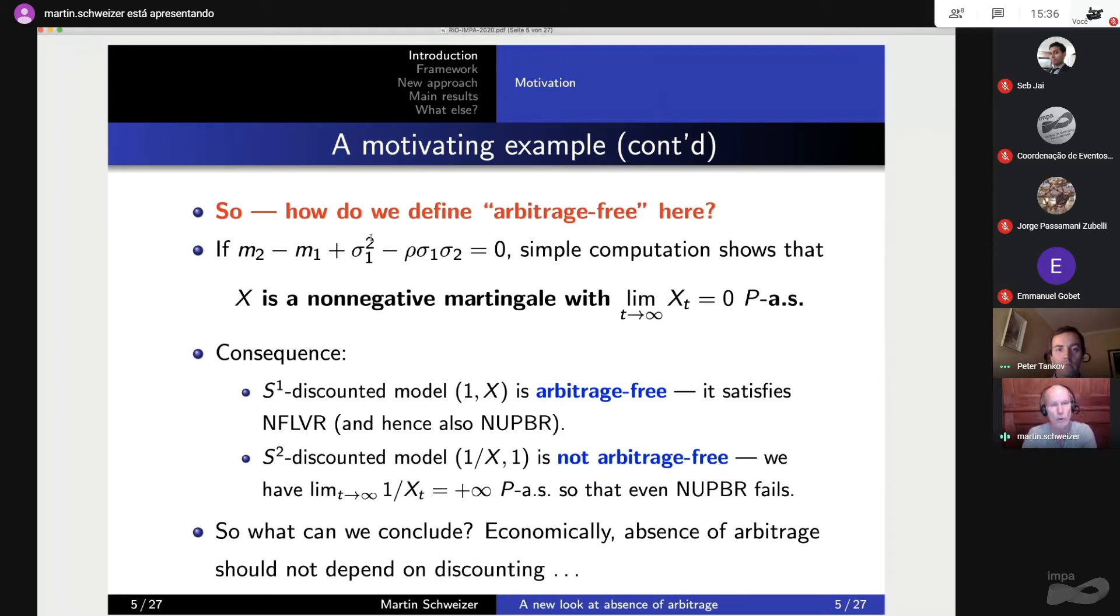Okay, so we have two possible discounted models. So how do we define arbitrage-free here? Do we say we have arbitrage-free if this one, the first one is arbitrage-free, or the second one? What do we do? Well, okay, if I make a particular choice of the parameters, this choice here, then it's very easy to check that the ratio x is a martingale, it's non-negative, and it converges to zero, almost surely, just because it's basically an exponential of a Brownian motion. And what this implies is, because we have a martingale for x, of course, the model, when you have discounted with the first asset, is arbitrage-free. You have the original measure as a martingale measure, so you have no free lunch with vanishing risk, so you also have NUPBR.